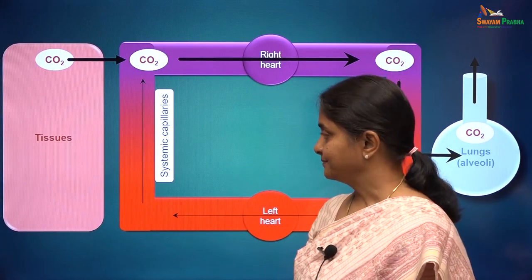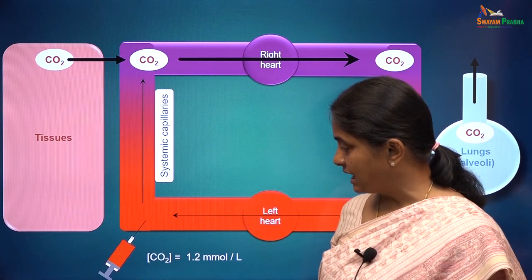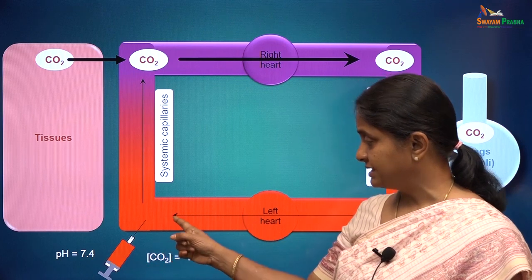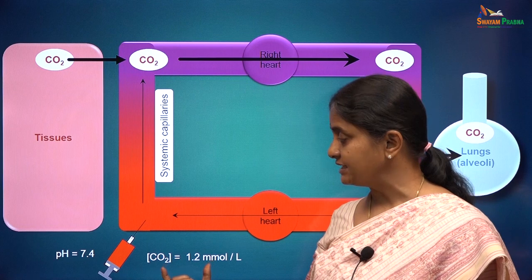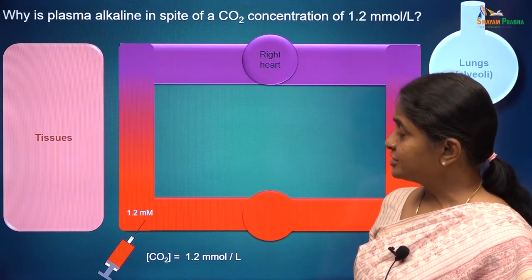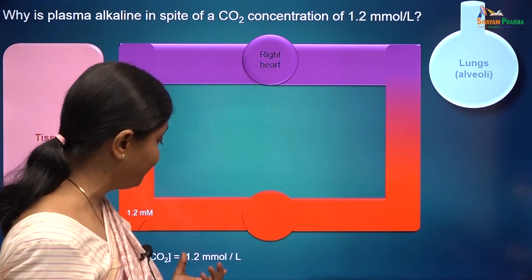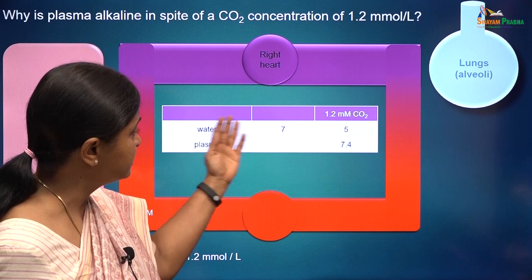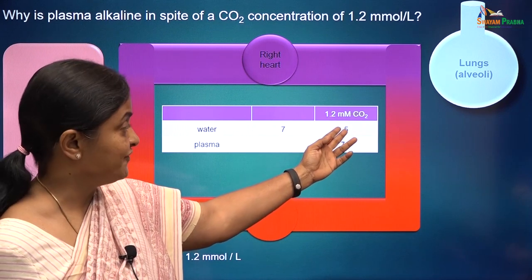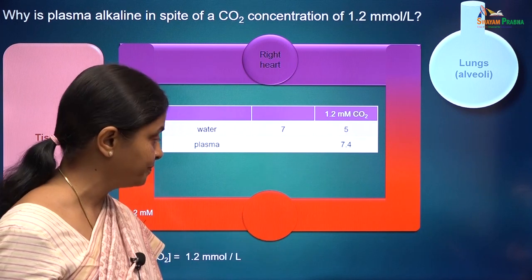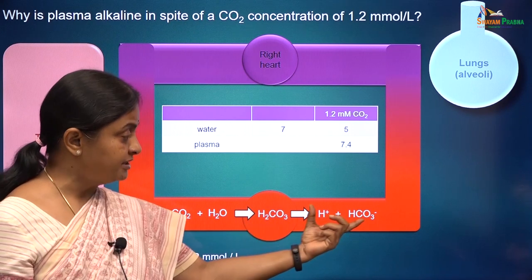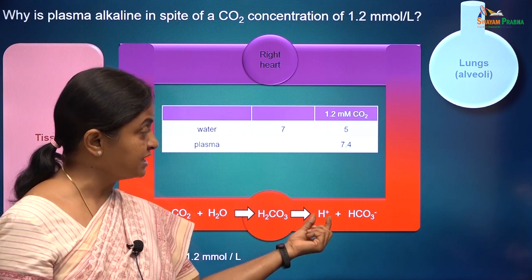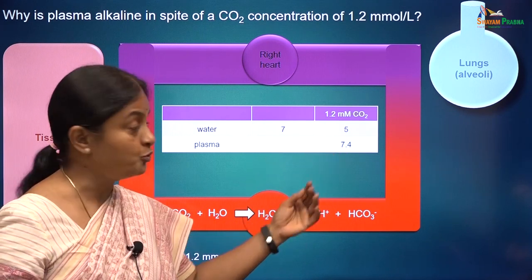What about plasma? If you take a sample of arterial blood, the carbon dioxide concentration is 1.2 millimoles per liter — and we know that the pH of blood is 7.4, even though so much carbon dioxide is present. The question is: why is plasma pH 7.4 even though there is 1.2 millimoles per liter carbon dioxide in it? We know that water with that amount of carbon dioxide has a pH of 5, but what makes plasma pH 7.4?